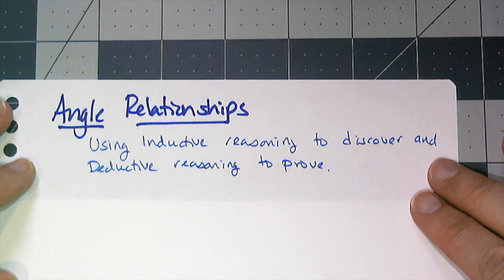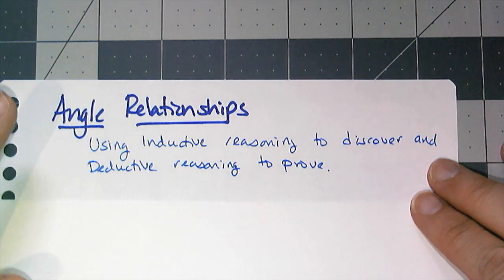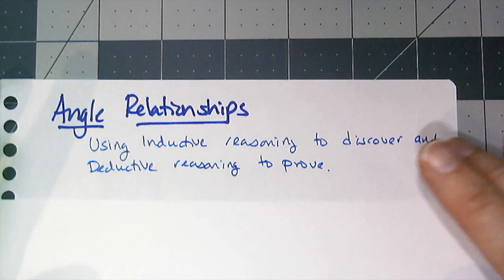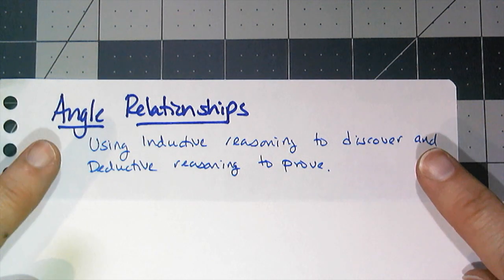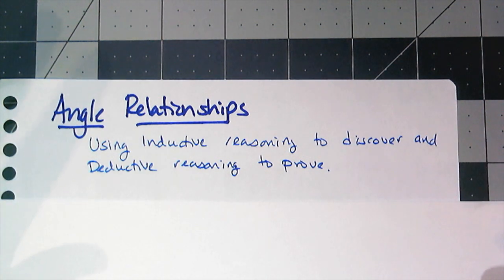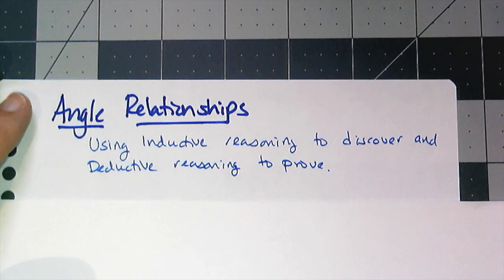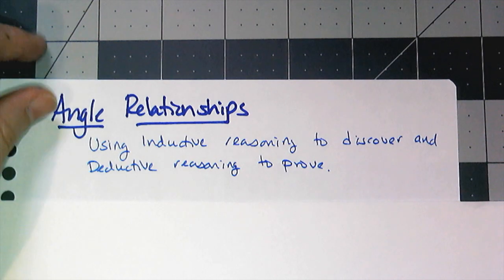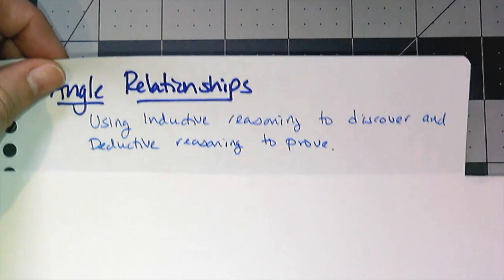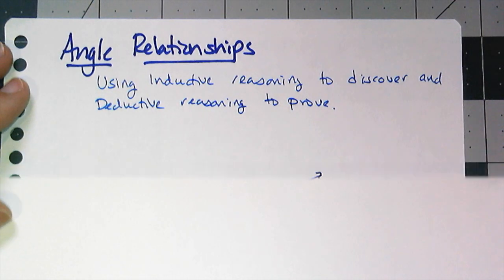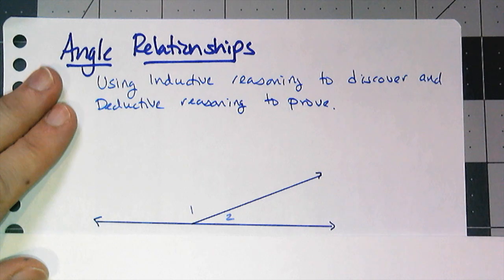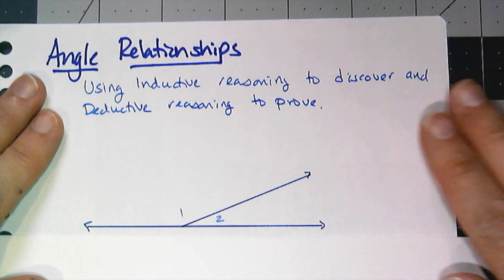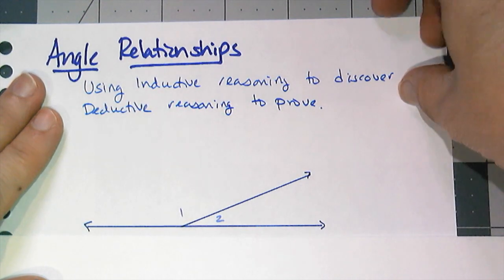Hello everybody. In this video we're going to talk about angle relationships, and specifically we're going to use some inductive reasoning to discover some special properties between angles, and then use our deductive reasoning to prove that those ideas are true. So we're going to start with something easy — something we kind of already know is true — and that is looking at linear pairs and a special property that linear pairs have.